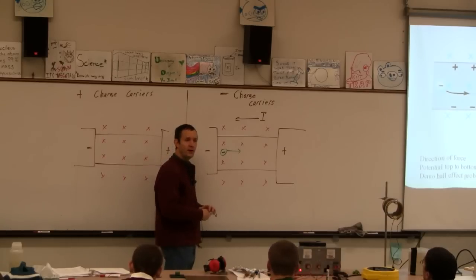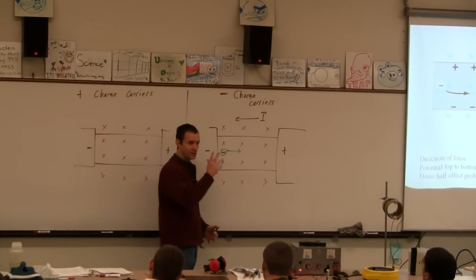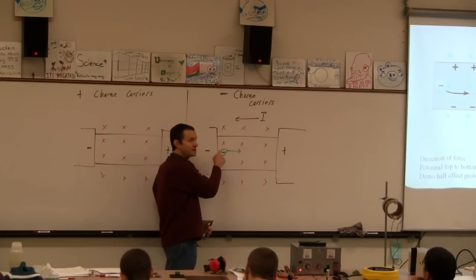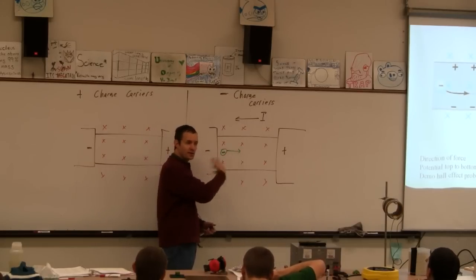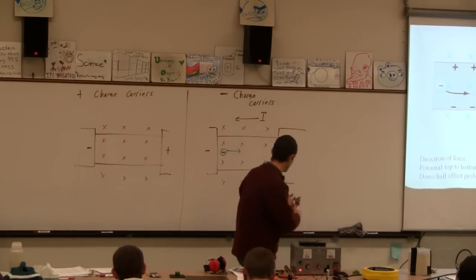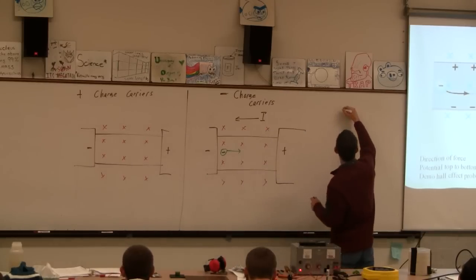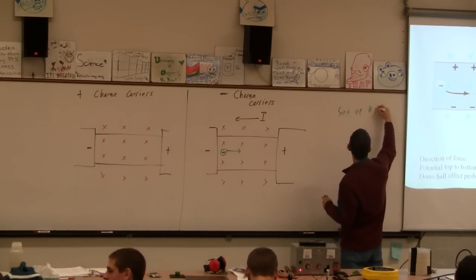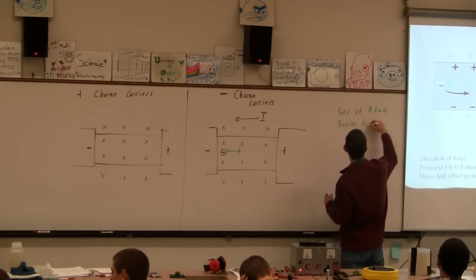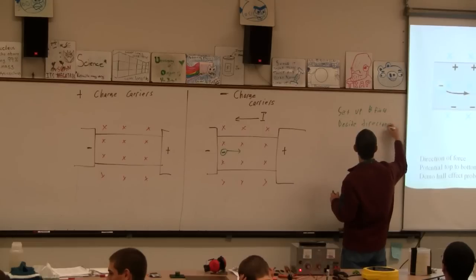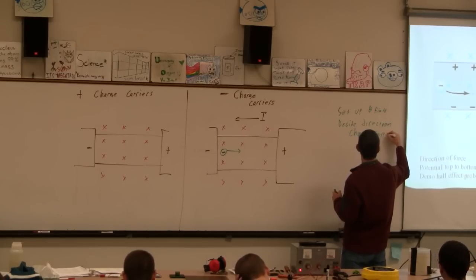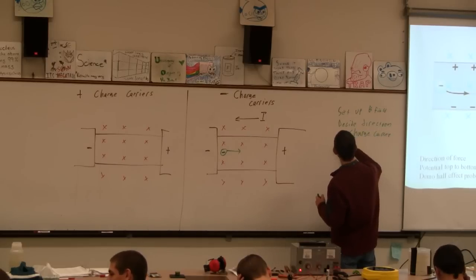Now let's figure out which way the electrons are going to be forced. We're going to use the right-hand rule. The first thing is: set up the magnetic field. The second thing is: decide which way the charge carrier has to go. And then the last step is: right-hand rule it.